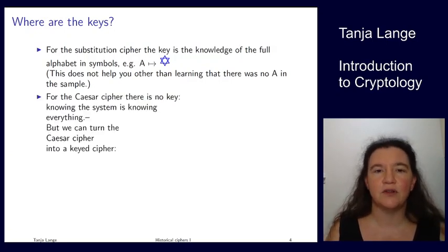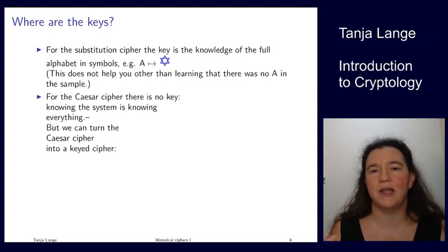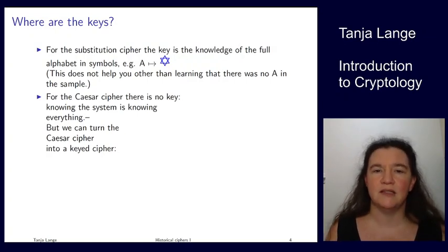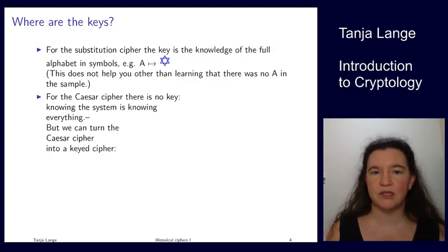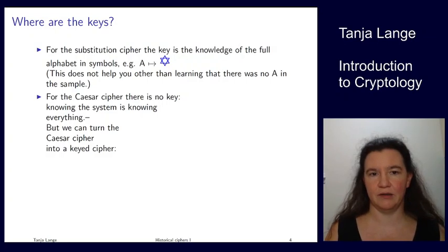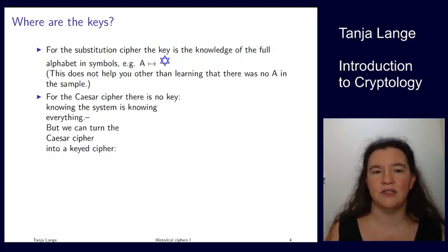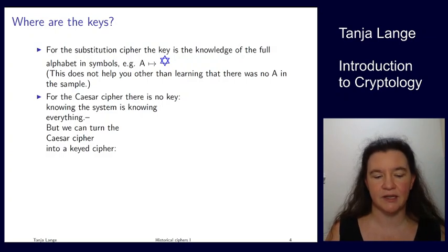Because it's not the Caesar cipher — it's not just a shift — this actually gives you some information, but no information about the other symbols. For the Caesar cipher as I've presented it here, the way it's historically described, there's no key. When you know the system, you know everything.